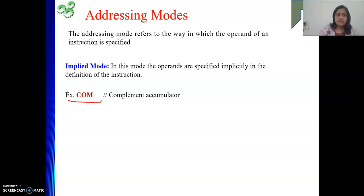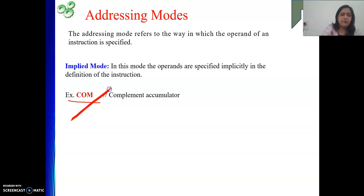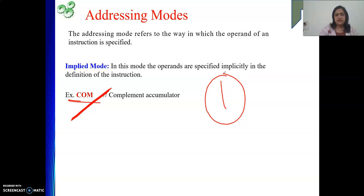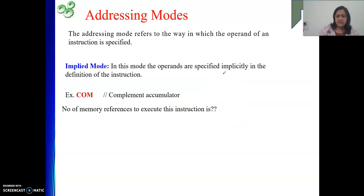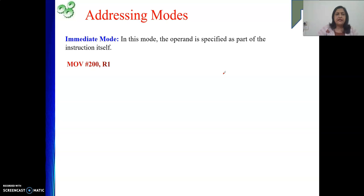Now let's analyze how many times we refer to memory when executing this instruction. Since there is no explicit operand, we do not need any memory operation for operand fetch or result store. We only require a single memory reference, and that is for fetching the instruction itself from memory, since we follow the store-and-fetch concept. So the number of memory references for implied mode is one.